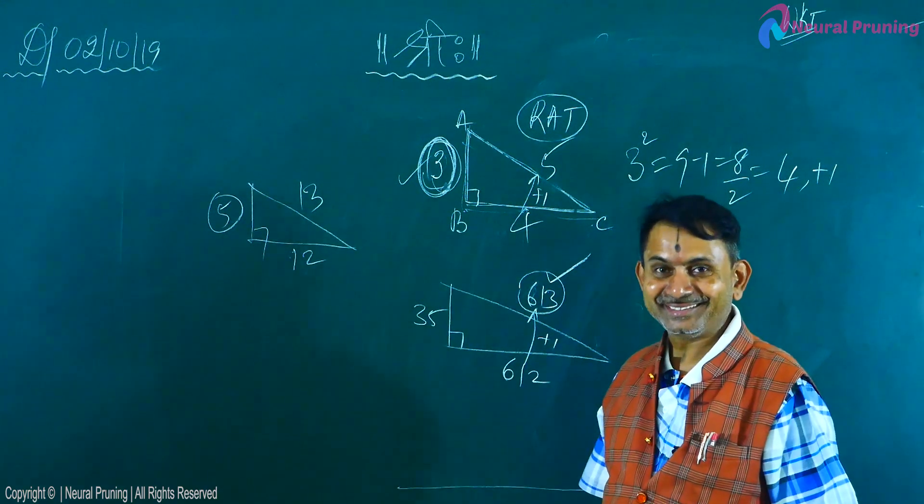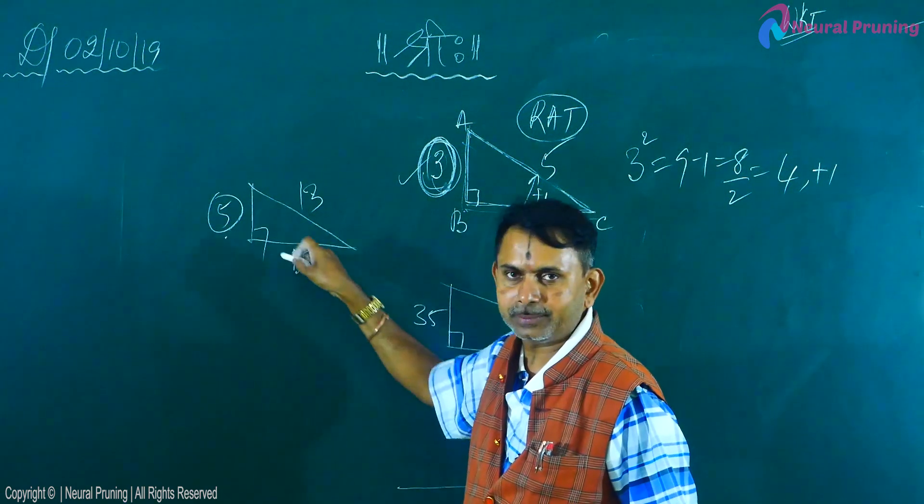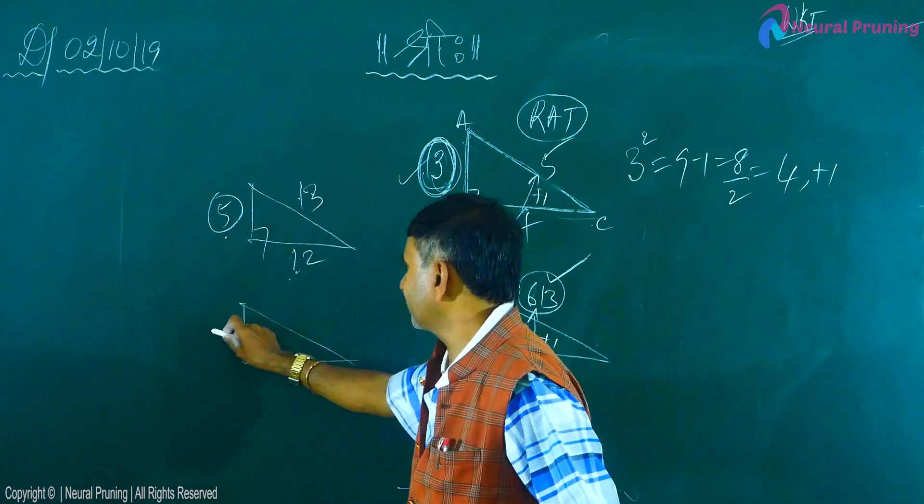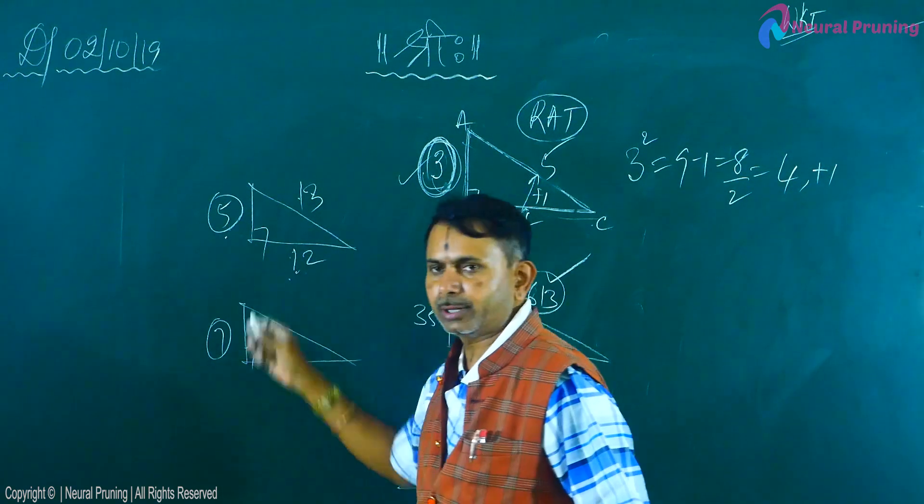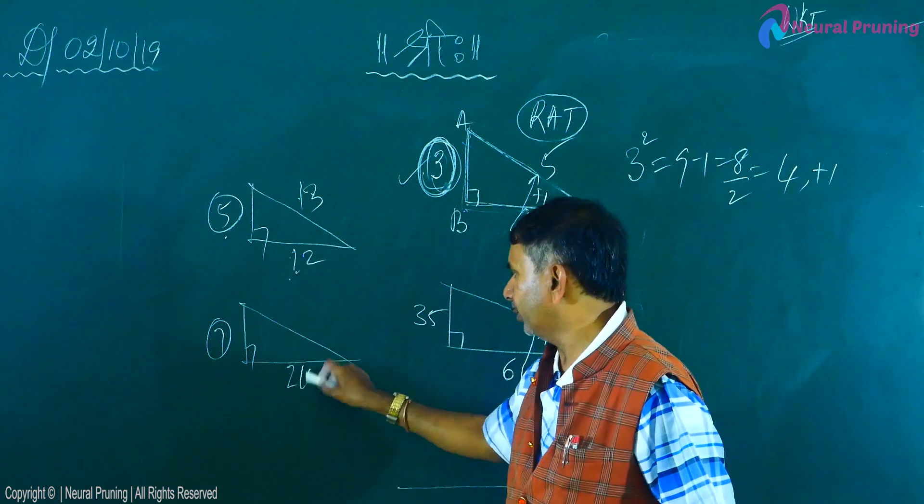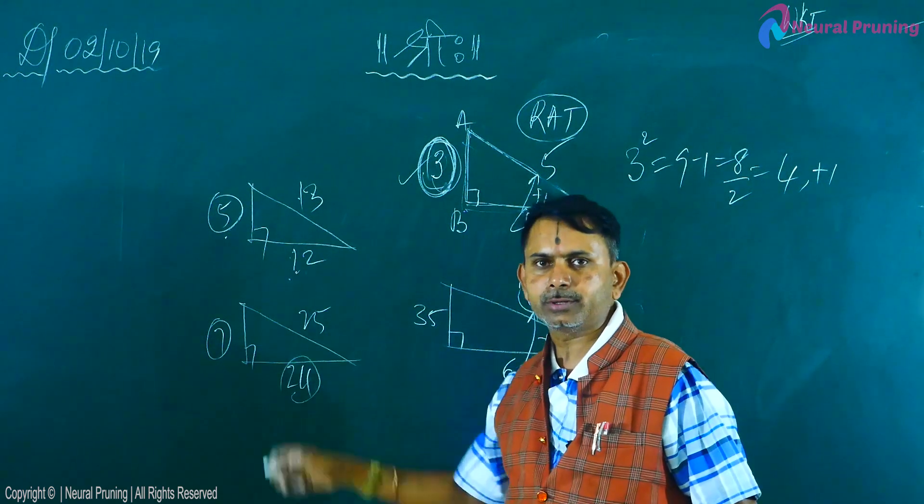Look at this. In 5, 12, 13, you can check. 25 plus 144 becomes 169. Similarly, if you take seven, dear children, carefully observe odd number. Square, 49, minus 1, 48, by 2, 24, next number 25. You can check, 24 square 576 plus 49 becomes 625.